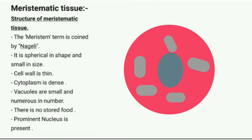The cell wall is thin and the cytoplasm is dense. Cytoplasm is a gel-like fluid present in the cell. Small vacuoles are present, numerous in number.